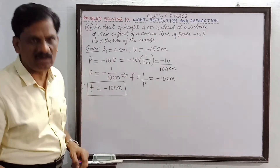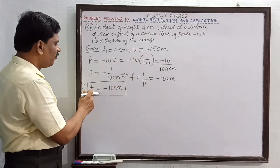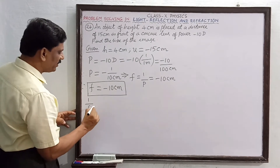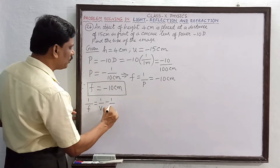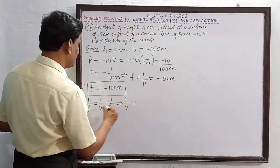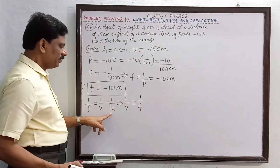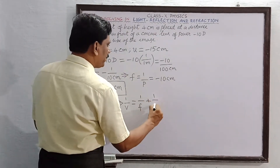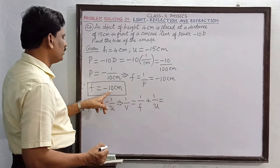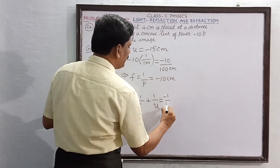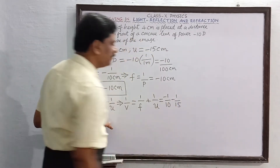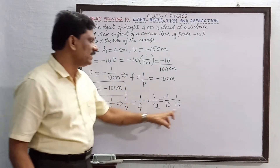Object distance is given and focal length is found. Now I will find image distance using the lens equation: 1 by f equals 1 by v minus 1 by u. Rearranging, 1 by v equals 1 by f plus 1 by u, which equals minus 1 by 10 plus 1 by 15. The LCM of 10 and 15 is 30.